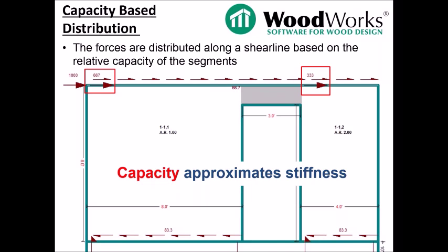Capacity-based distribution: forces are distributed along a shear line based on the relative capacity of the segments. In this case, the capacity of the segments is used to approximate the stiffness. For these two wall segments, the details are exactly the same and do not have any aspect ratio adjustments applied. This means that segment length divided by the summation of the total shear wall length along the line is used to distribute the load. So, 8 feet plus 4 feet is 12 feet: 8 divided by 12 is two-thirds of the thousand pounds to the 8-foot segment, and 4 divided by 12 is one-third to the 4-foot segment.